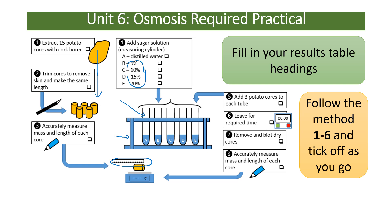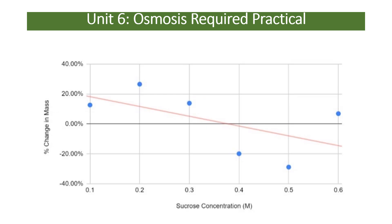You add your potato cores into each tube, leave them for a set amount of time, and weigh them before and after using a balance to measure the mass — checking whether the mass goes up because water moved into the potato, or goes down because water left. What you get is a graph: at some concentrations the water moves into the potato, so if the solution has a higher water concentration than the potato, water rushes in and mass increases via osmosis through a partially permeable membrane.